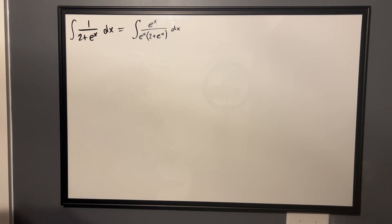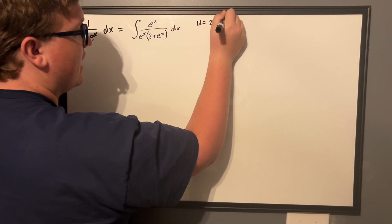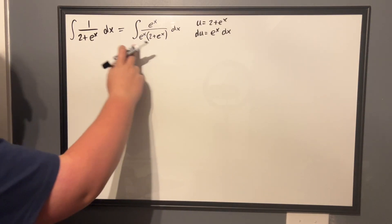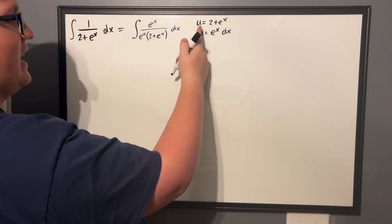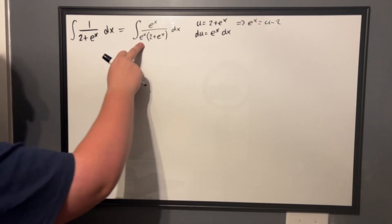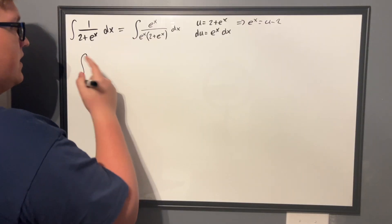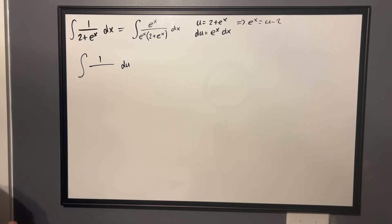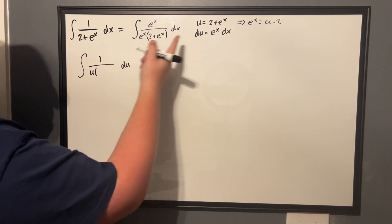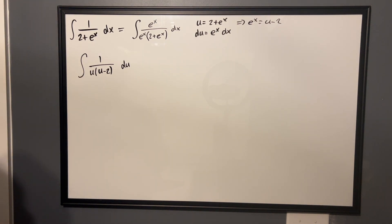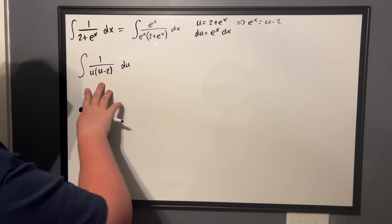Now we can try substitution. If we choose u = 2 + eˣ, then du = eˣ dx, which gets rid of the numerator eˣ dx. But we still have this extra factor of eˣ in the denominator. The nice thing about our choice of u is that we can say eˣ = u − 2 by subtracting 2 over. So we have the integral of 1 / (u · (u − 2)) du. This is much nicer because now we can go ahead and break it into partial fractions — and the partial fractions here are not hard either.